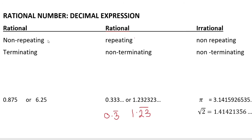The second type is a decimal that repeats. When a decimal repeats a digit, it is called non-terminating repeating. For example, 0.333... which is written as 0.3 bar — it repeats the digit 3. This is a non-terminating repeating decimal, and it is still a rational number.